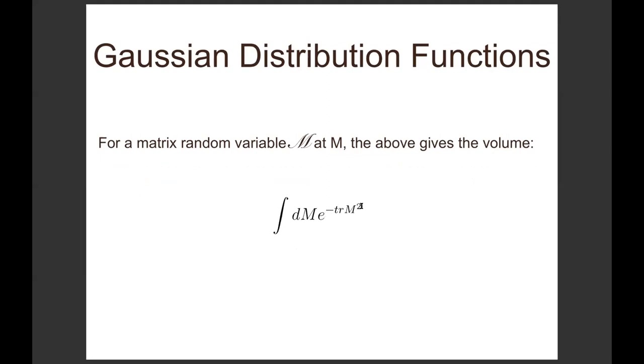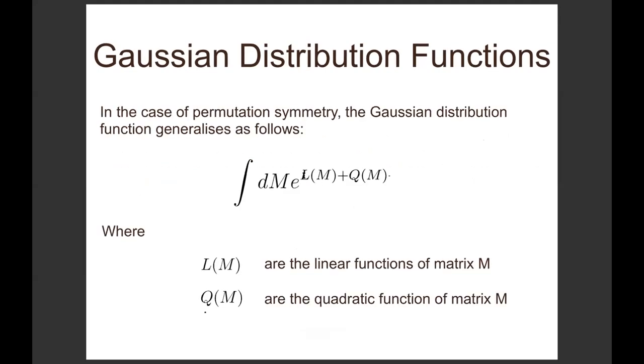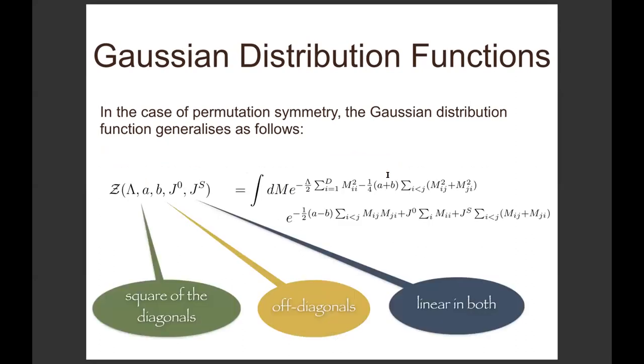For random matrix theory, it's dm e to the power of minus trace of m squared for continuous symmetry. If you generalize to permutation symmetry, you must change minus trace of m squared to a set of linear functions which we denote by L(m) and a set of quadratic functions which we denote by Q(m). This is the model that Sanjay has solved, and it looks like this for people who like symbols. I actually love this. It has five parameters here: delta squared of the diagonals of the matrices, obviously a and b the off-diagonals of the matrices, and terms J_0 and J_s which are linear.